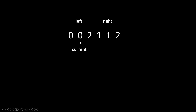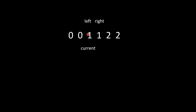Again we get a zero, so we swap — zero remains in the same position — and increment both left and current pointers. Then we encounter a 2, so we swap it with the element at the right pointer and decrement the right pointer. Now the current pointer points to a 1, so we do no swapping and simply increment the current pointer. Again we encounter a 1 — no swapping, increment current pointer.